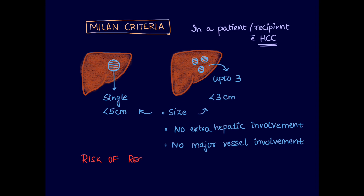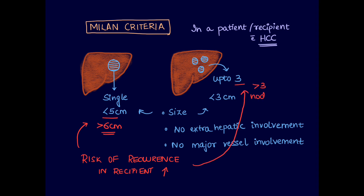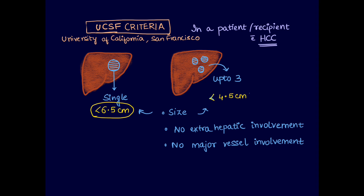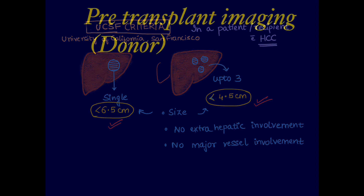Risk of recurrence in the donated liver increases if a single nodule exceeds 6 cm or if there are more than 3 nodules. A modification of Milan criteria is the UCSF criteria (University of California, San Francisco), which allows a single nodule up to 6.5 cm and multiple nodules up to 4.5 cm each.